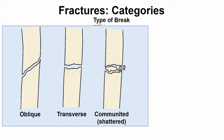The first category is the type of break — essentially the shape of the break. We can see there are oblique and transverse breaks. The last type is comminuted, meaning shattered, where you see multiple fragments. It's important to categorize these because with shattering it may be necessary to remove some of those fragments.